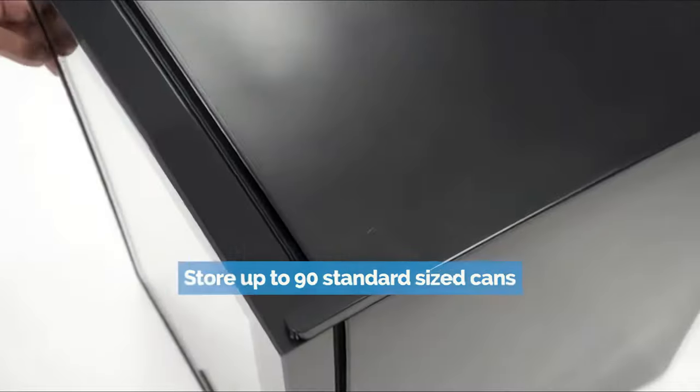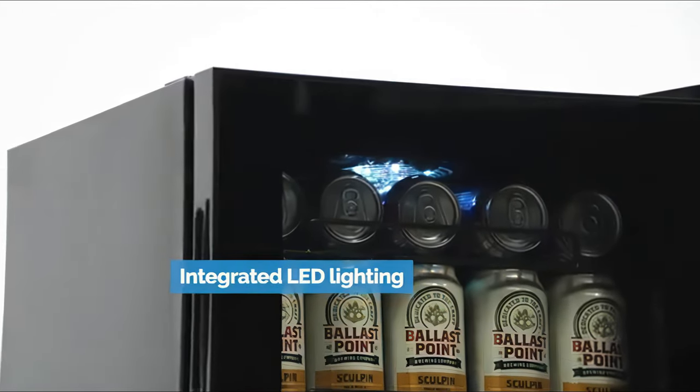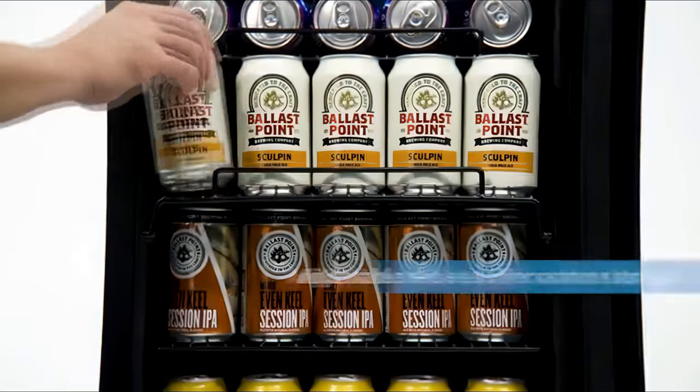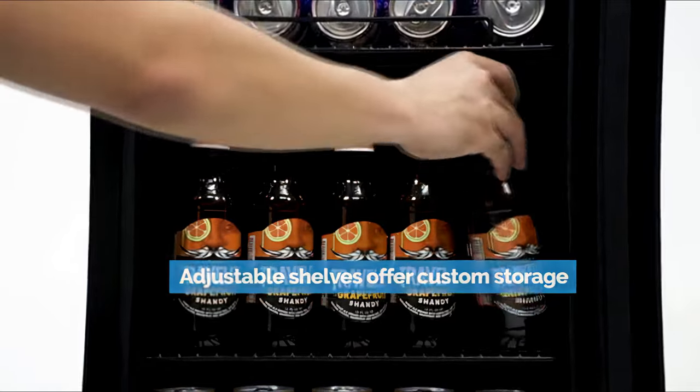Impressively, you can hold up to 90 standard cans at a time in this fridge. There is also LED lighting so you can see inside easily. Additionally, the door can be reversed and the racks inside can be removed if you need to store items in any particular way.